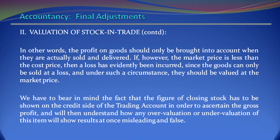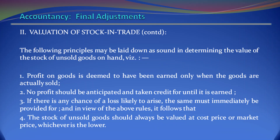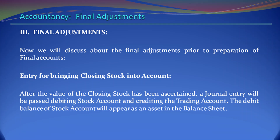We have to bear in mind the fact that the figure of closing stock has to be shown on the credit side of the trading account in order to ascertain the gross profit, and any overvaluation or undervaluation of this item will show results that are misleading and false. The following principles may be laid down as sound in determining the value of the stock of unsold goods on hand: 1. Profit on goods is deemed to have been earned only when the goods are actually sold. 2. No profit should be anticipated and taken credit for until it is earned. 3. If there is any chance of a loss likely to arise, the same must immediately be provided for. In view of the above rules, the stock of unsold goods should always be valued at cost price or market price, whichever is lower.